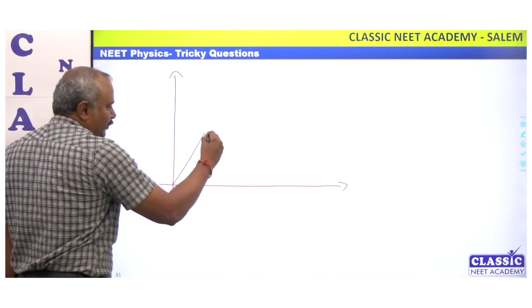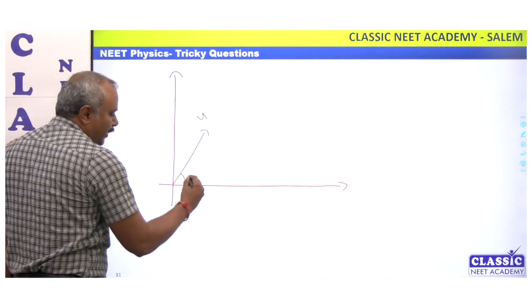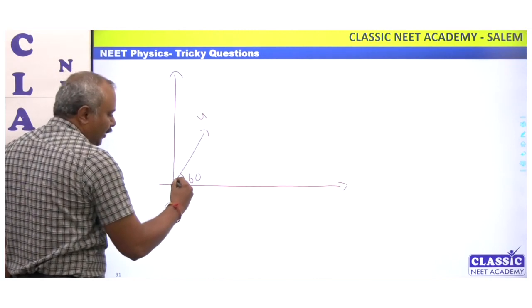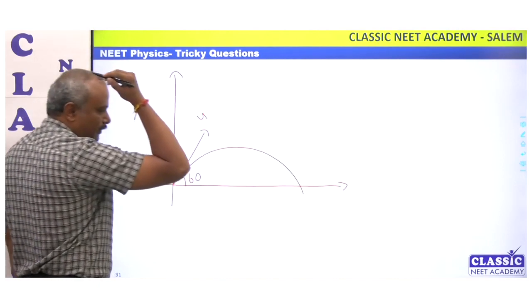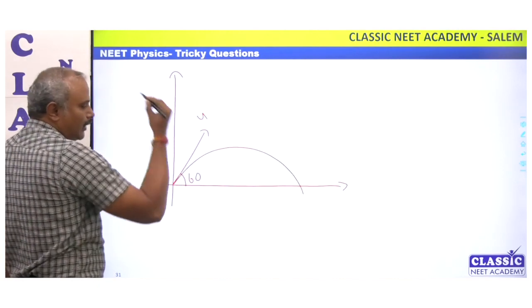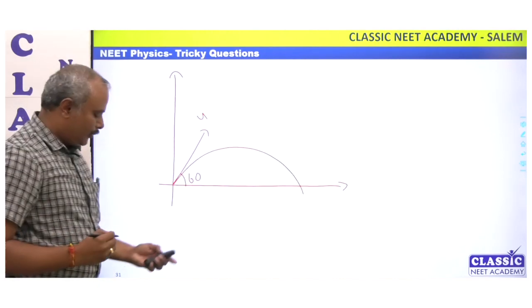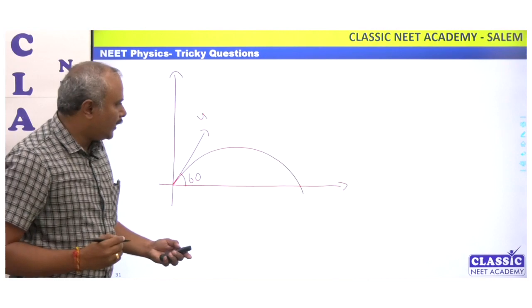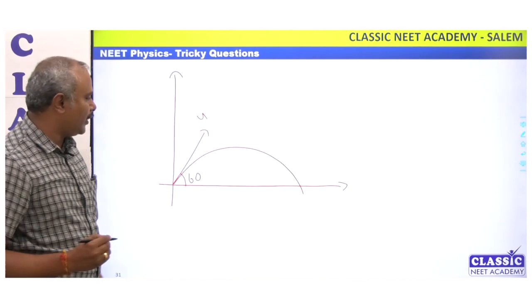The projection velocity U is making 60 degrees — it goes like this. This is a projectile. U is 20 meters per second.